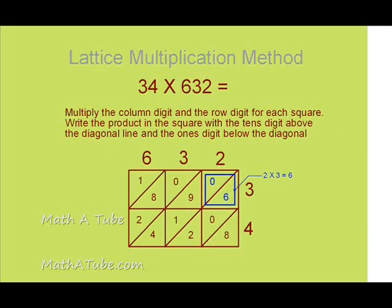The next step in the process is to multiply the column digit and the row digit for each square. In the example, the row digit is 3 and the column digit is 2, which 2 times 3 is 6. The ones digit goes below the diagonal line and the tens digit goes above the diagonal line, as shown.